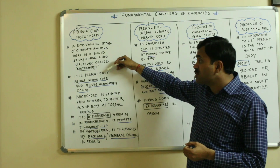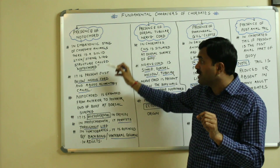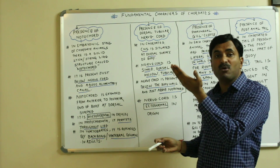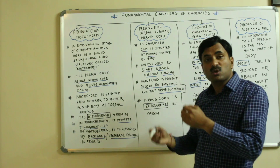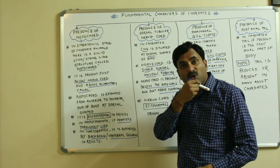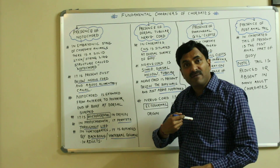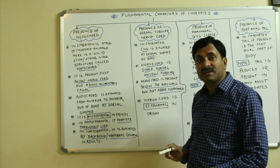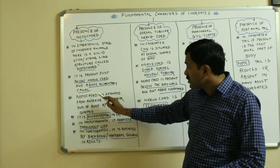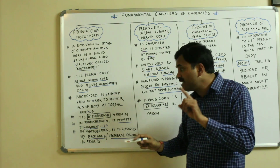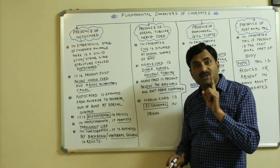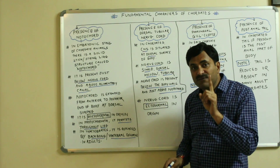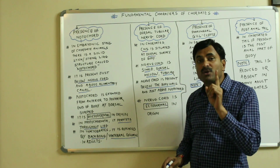Now see the position of the notochord: it is present below the body wall and above the alimentary canal. The notochord is present in the dorsal region and the alimentary canal is present in the ventral region. So it is present below the body wall and above the alimentary canal. The notochord extends from the anterior to the posterior end of the body at the dorsal surface — so the position of the notochord is dorsal, not ventral.